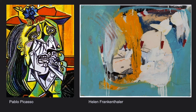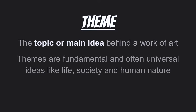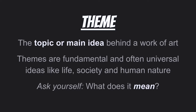Clearly there's more than that, but those are the big categories. Remember, a subject would be the people, places, or things we see in an artwork — so what do I see when I look at this? Now when we get to theme, the theme is a little heavier than the subject. The theme is the topic or main idea behind the work of art. Themes are fundamental, often universal ideas — things that everybody understands, like life, society, and human nature. When looking at an artwork and trying to guess the theme, ask yourself: what does it mean? So the subject is what am I looking at, and the theme is what does it mean. A lot of the same themes are seen throughout literature and art together.